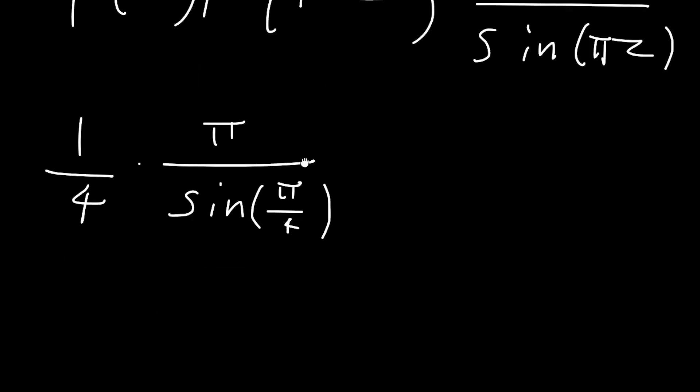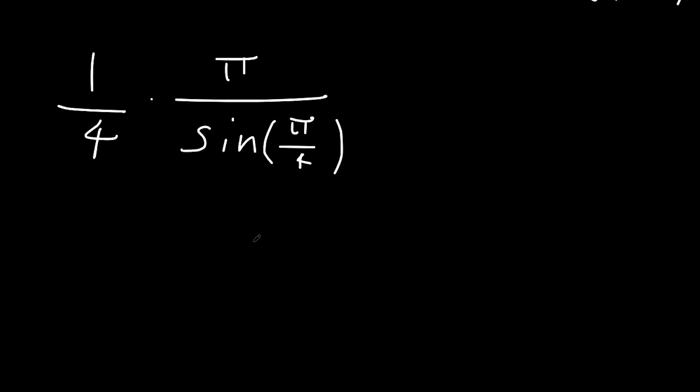And we can work out sine pi over four as one over square root two, giving our answer as pi square root two over four. There we go.